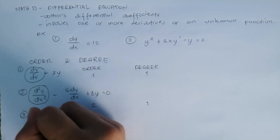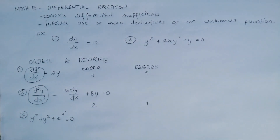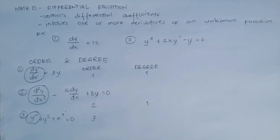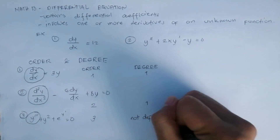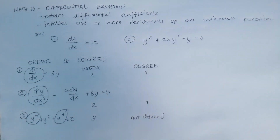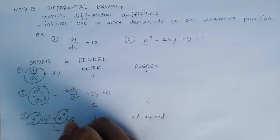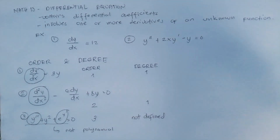For example number three, we have y''' + y² + e^(y') = 0. The order is 3. However, the degree is not defined, because y' appears as the exponent of e — this makes the equation not a polynomial in the derivative.